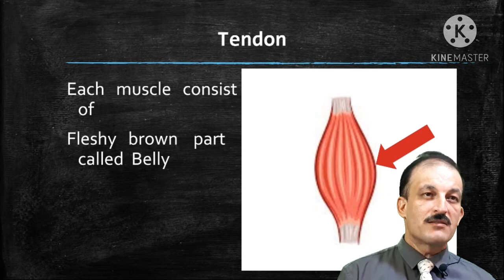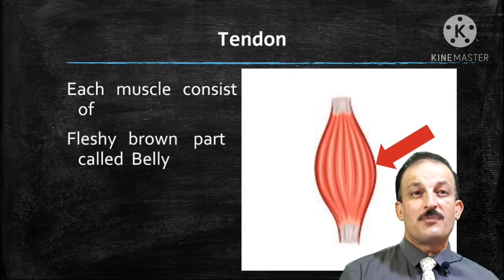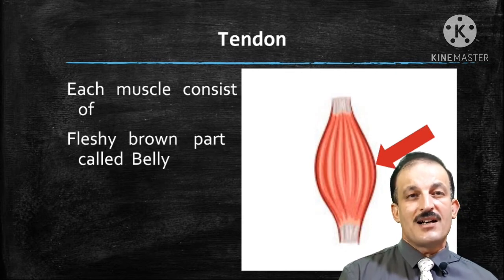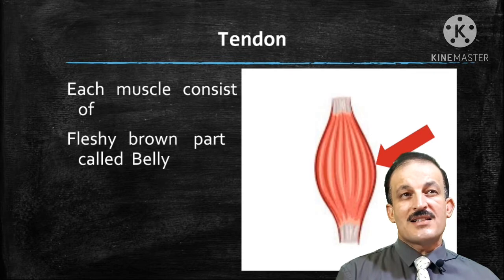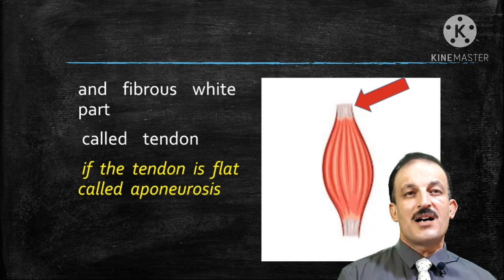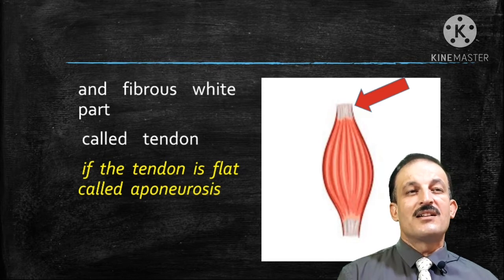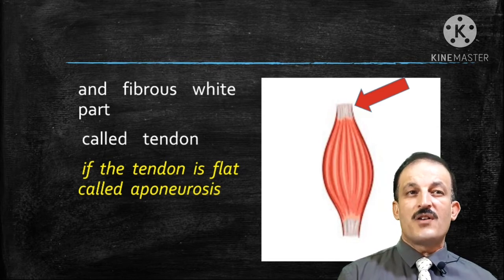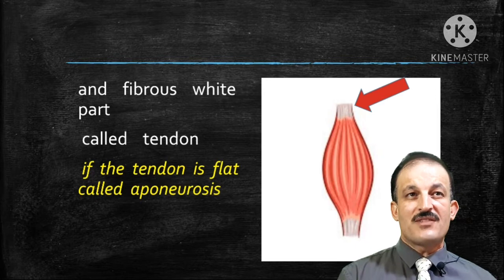Now, tendons. Generally, each muscle consists of a fleshy brown part called the belly, as pointed by the red pointer, and a fibrous white part called the tendon, as pointed by the other red pointer. If the tendon is flat, it is called an aponeurosis. So the definition of aponeurosis is a flat tendon.